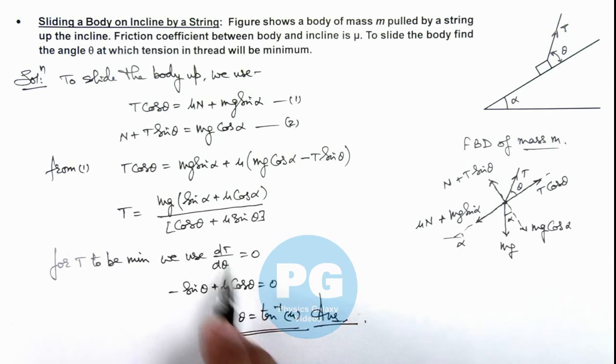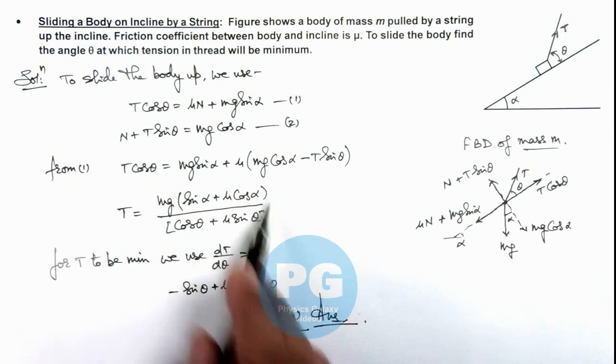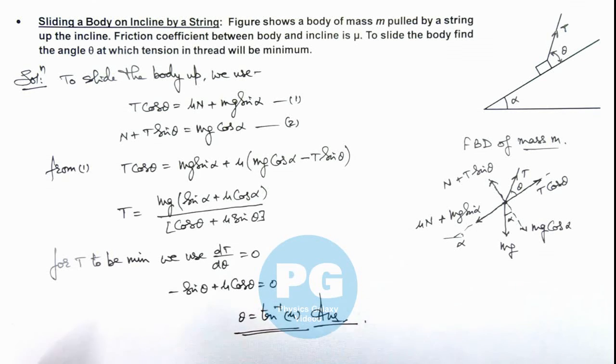a positive value of second derivative. That means the denominator will be maximum, and correspondingly the value of tension here will be minimum corresponding to the second derivative of d²T by dθ².